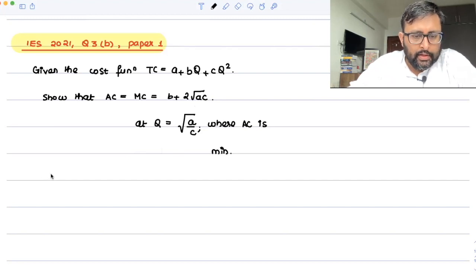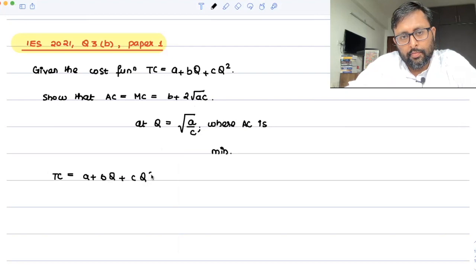So you are given the TC function: a + bq + cq², right?